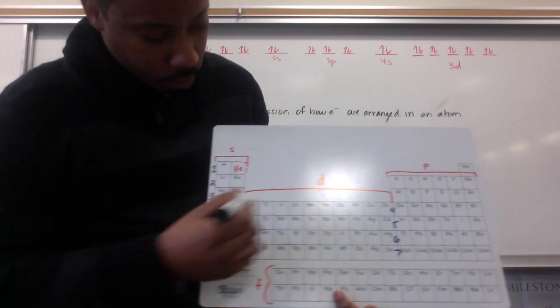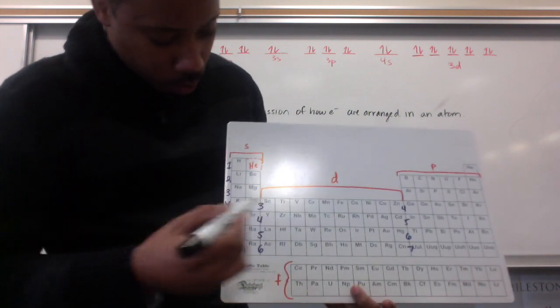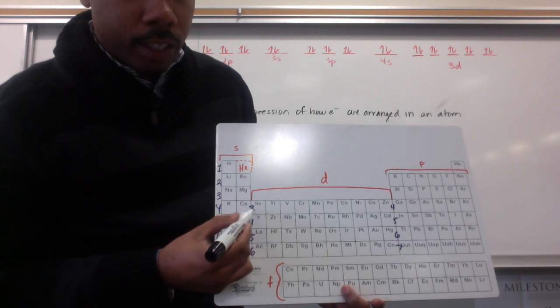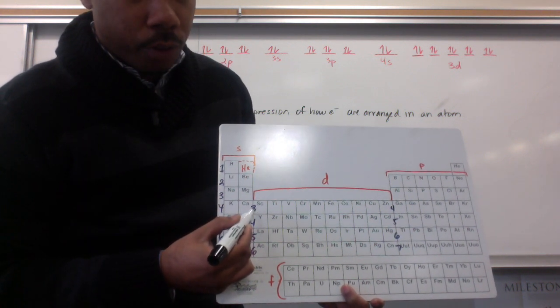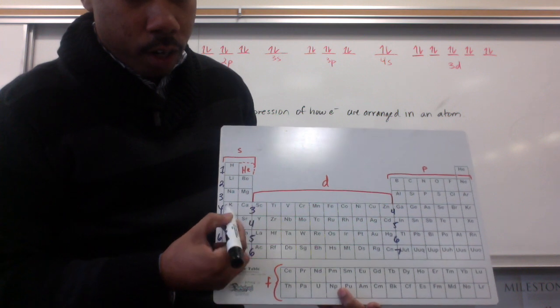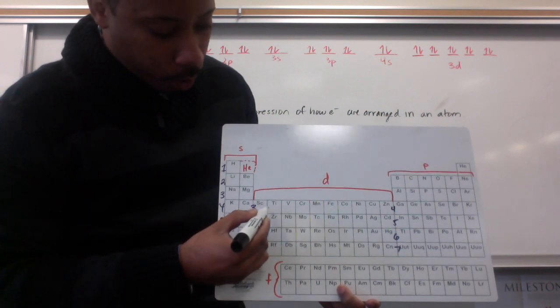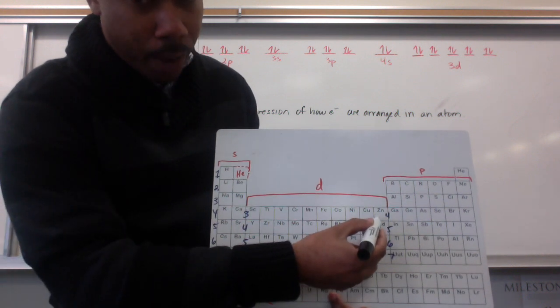So, after 3p, we have 4s, and then we go into the d block. When we go into the d block, we drop one energy level to 3. So, from 4 to 3, and it's 3d, and if we're going all the way through, it's 3d10, because we're passing 10 elements.